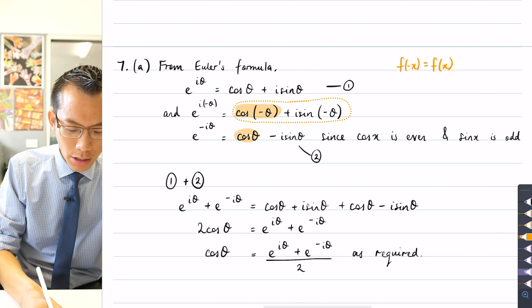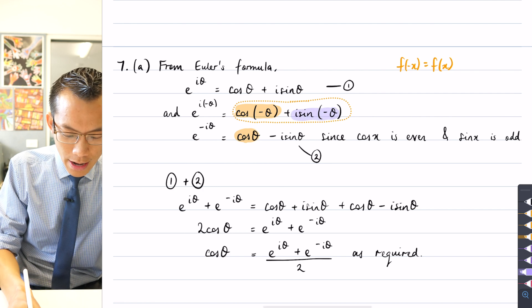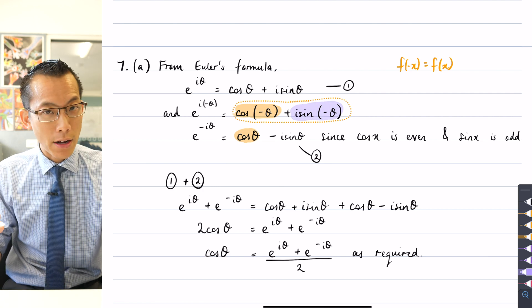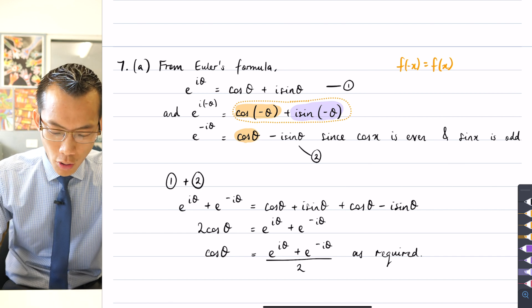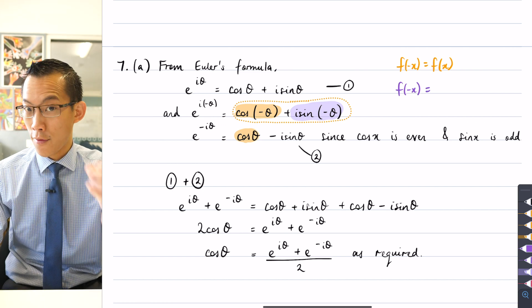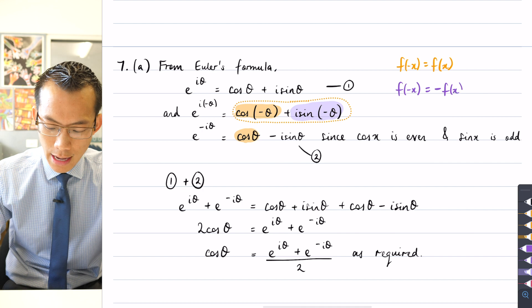So therefore, I can do this substitution here, and then in a similar way, I've got i sin(-θ), sine by contrast is an odd function. So its definition for oddness is that f(-x) doesn't give you f(x), that's even symmetry,